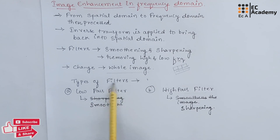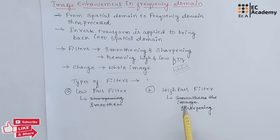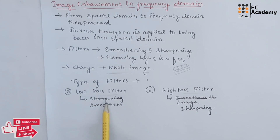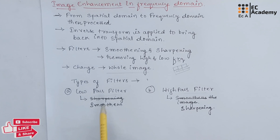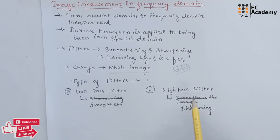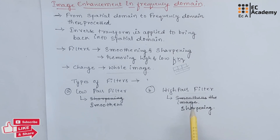Coming to the types of filter, there are two types of filter. The first type is low pass filter and the second type is high pass filter. The low pass filter removes all the high frequency components from the image, keeping only the low frequency components. Whereas in high pass filter, it removes low frequency components and only keeps high frequency components.